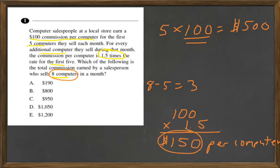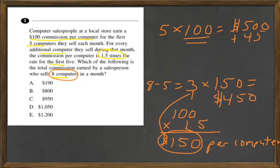So I need to take this rate times these three, so this three times 150 is going to equal $450. And then I'm going to add that to that 500, and that equals $950. So my answer is C.